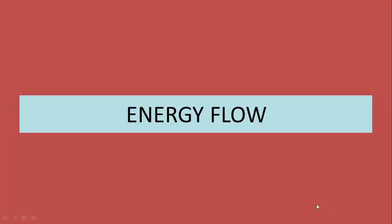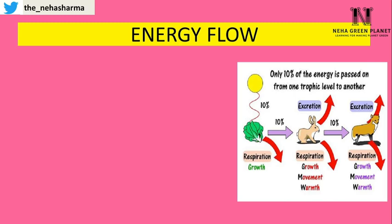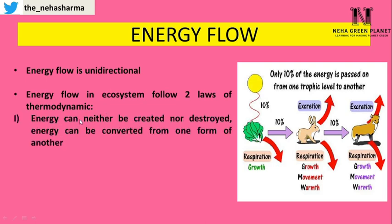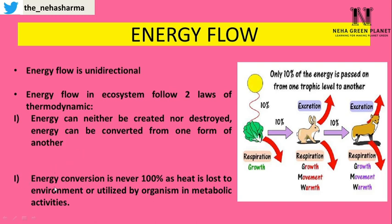The next functional feature of ecosystem is energy flow. Energy flow takes place from producer to herbivore and from herbivore to carnivore, and it is always unidirectional. Energy flow in ecosystem follows two laws of thermodynamics. According to the first law, energy can neither be created nor destroyed — it is simply converted from one form to another. Solar energy is transferred into plants and converted into carbohydrates, a biochemical form of energy. According to the second law, energy conversion is never 100% efficient, as heat is lost to the environment or utilized by organisms in metabolic activity.